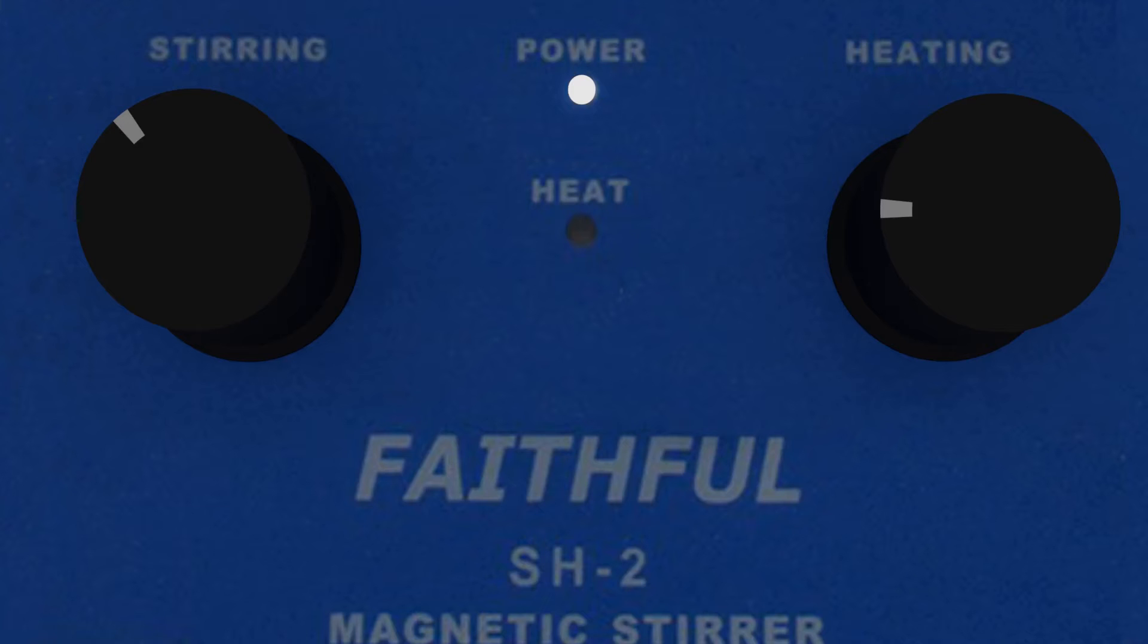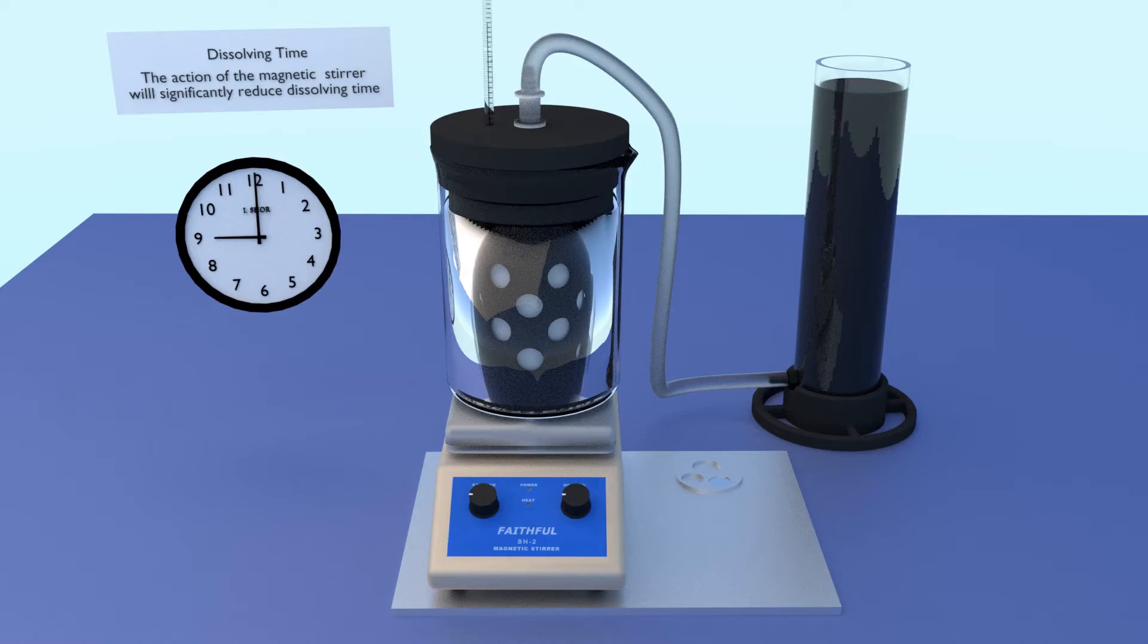If refining platinum or most other platinum group metals, you may want to turn on the heat to speed dissolution. However, palladium does not require heat. Typical dissolving time is about 1 hour.